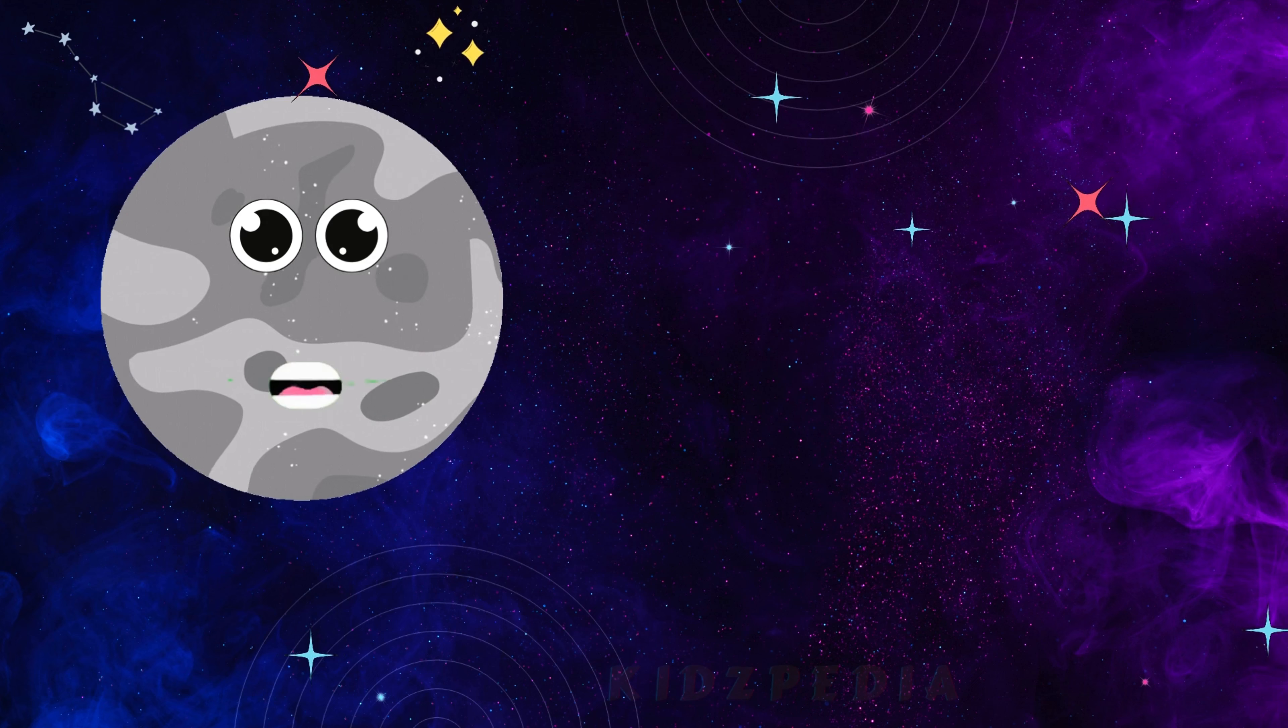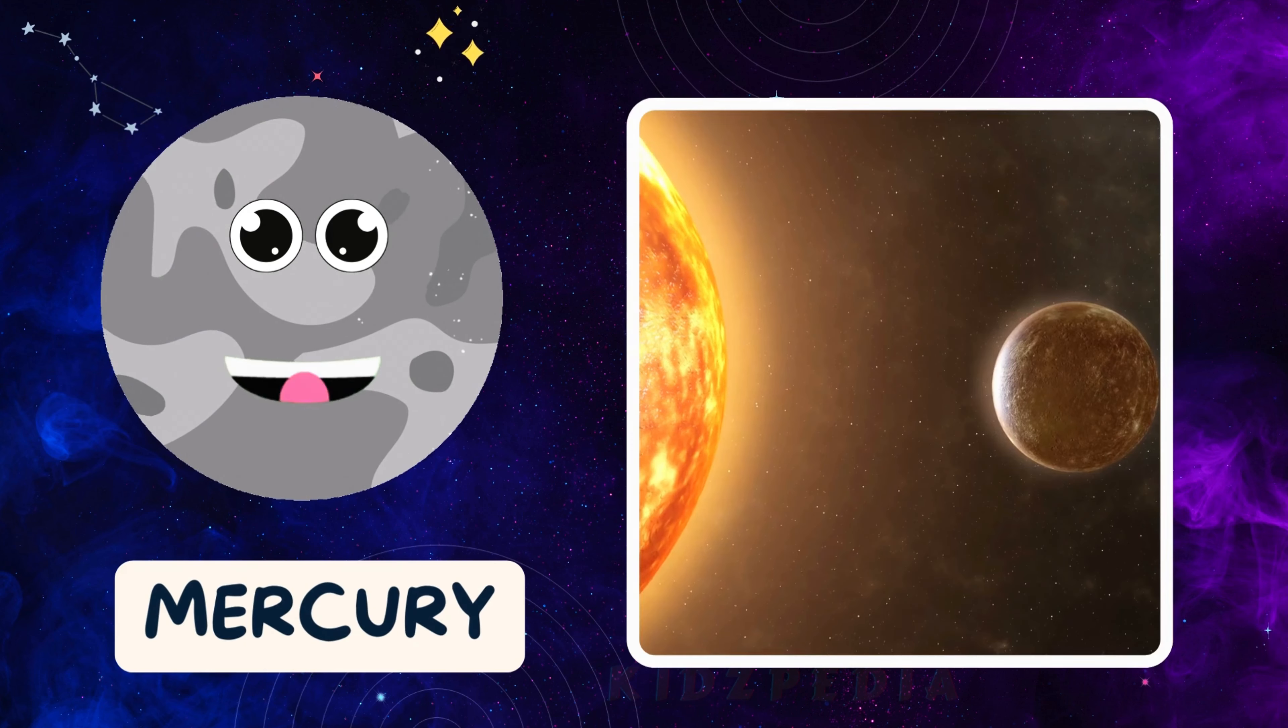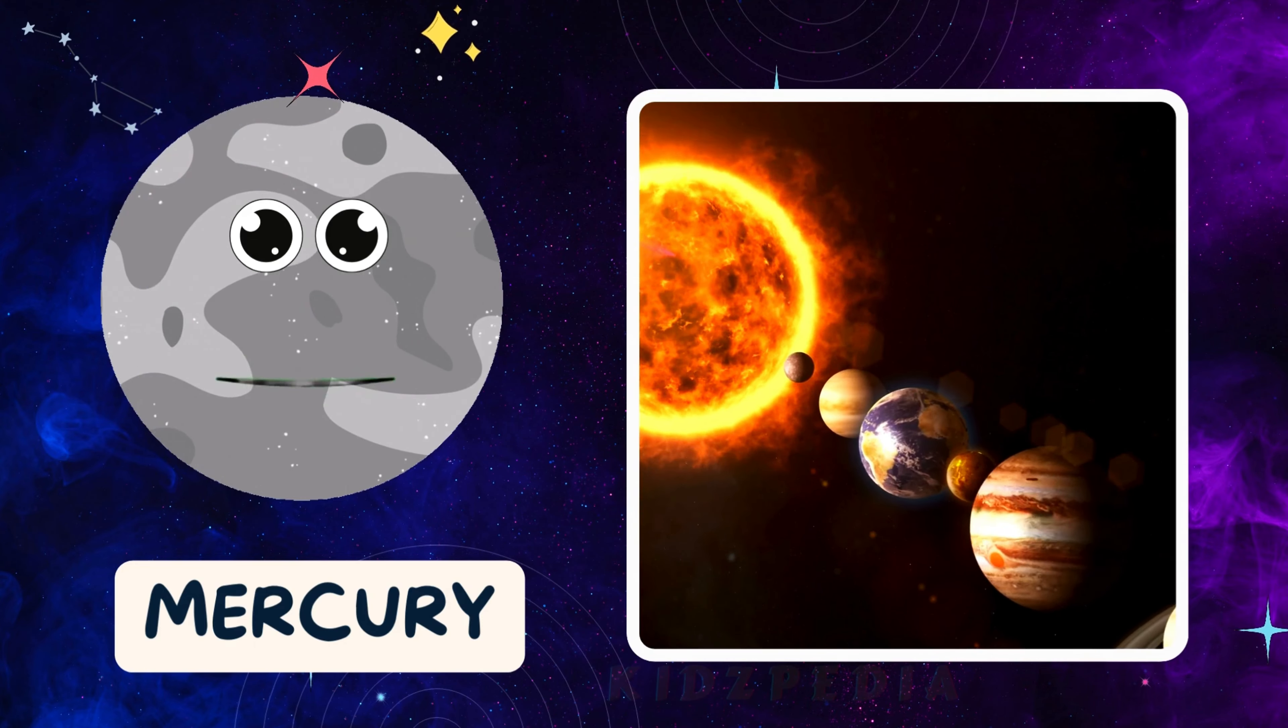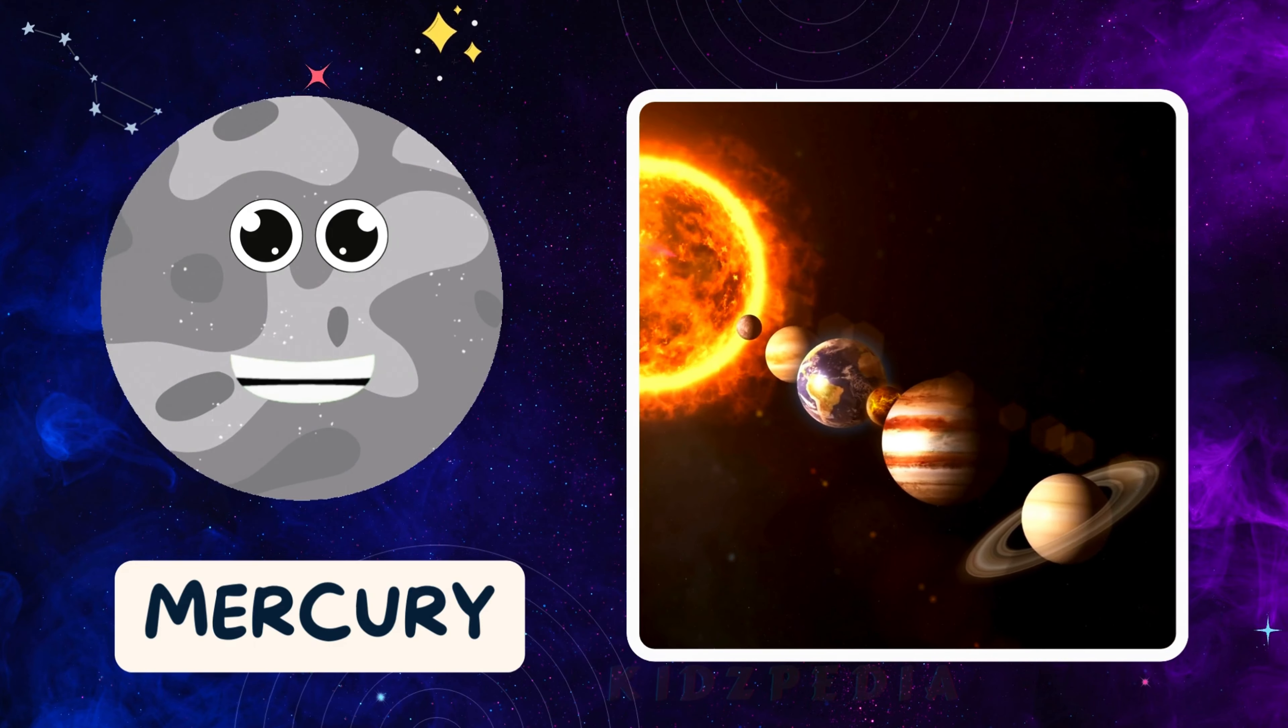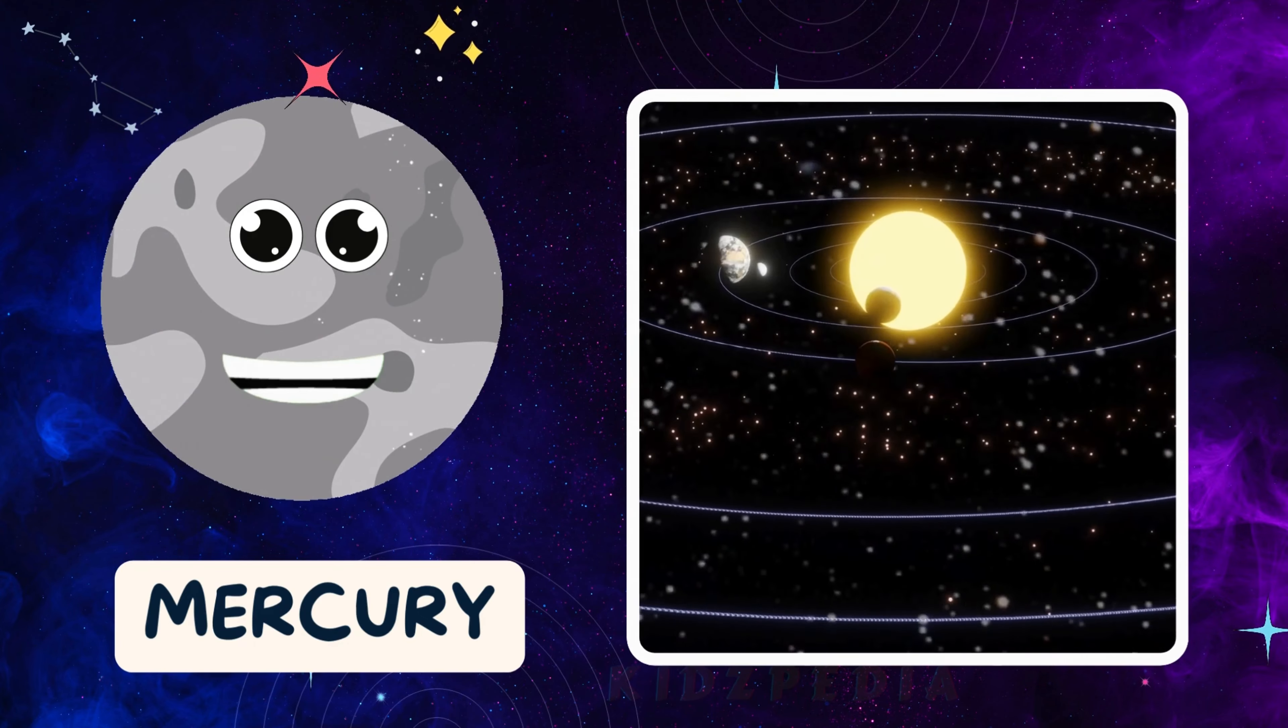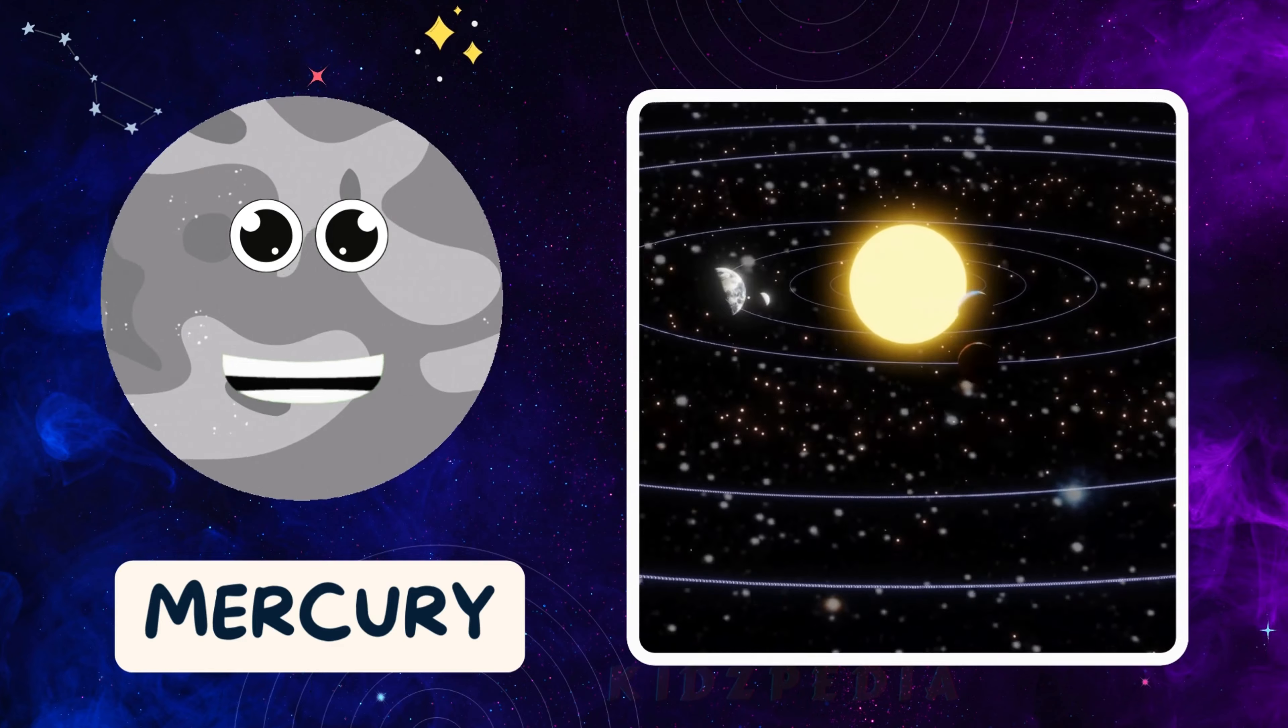Hi, I'm Mercury. I'm the closest planet to the sun, so I get really hot. I'm also the smallest planet in our solar system. Even though I'm tiny, I move really fast and go around the sun in just 88 days.